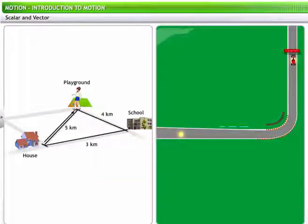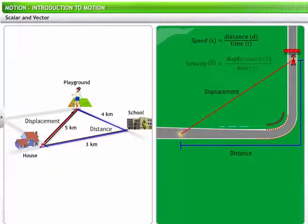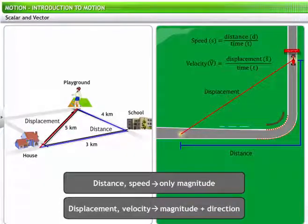So far, we have reviewed some related measures of motion, that is, distance and displacement, and speed and velocity. Among these measures, distance and speed have only magnitude, whereas displacement and velocity have magnitude as well as direction.